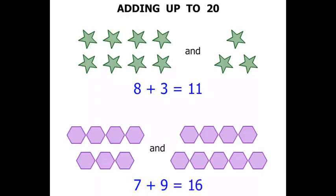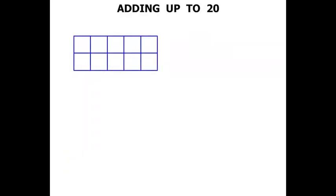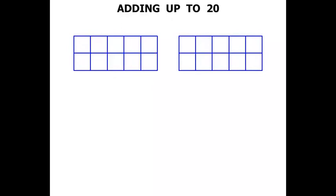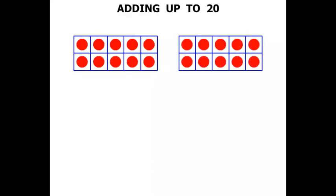Fantastic. Now another way of doing this is to come up with a few boxes. Each of those grids can fit five dots in. Five, ten, fifteen, twenty. Quite useful.